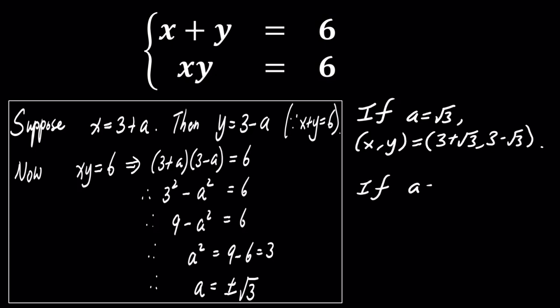Conversely, when a equals negative square root of 3, the solution becomes x, y equals 3 minus square root of 3, 3 plus square root of 3.